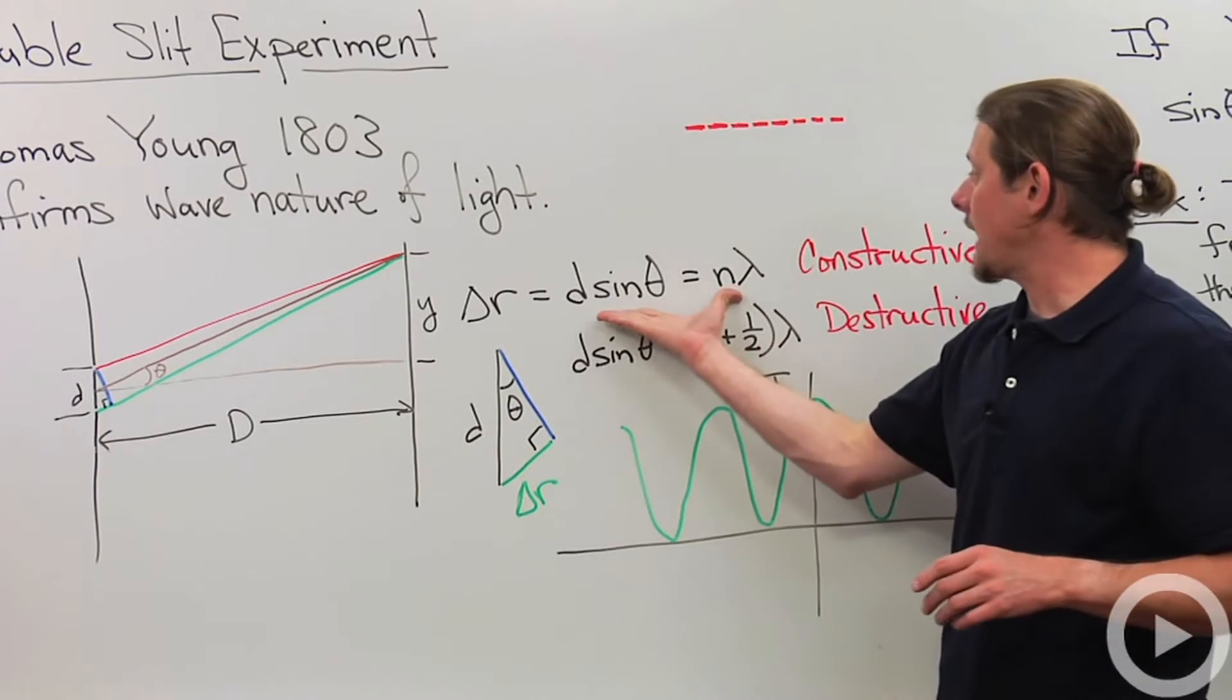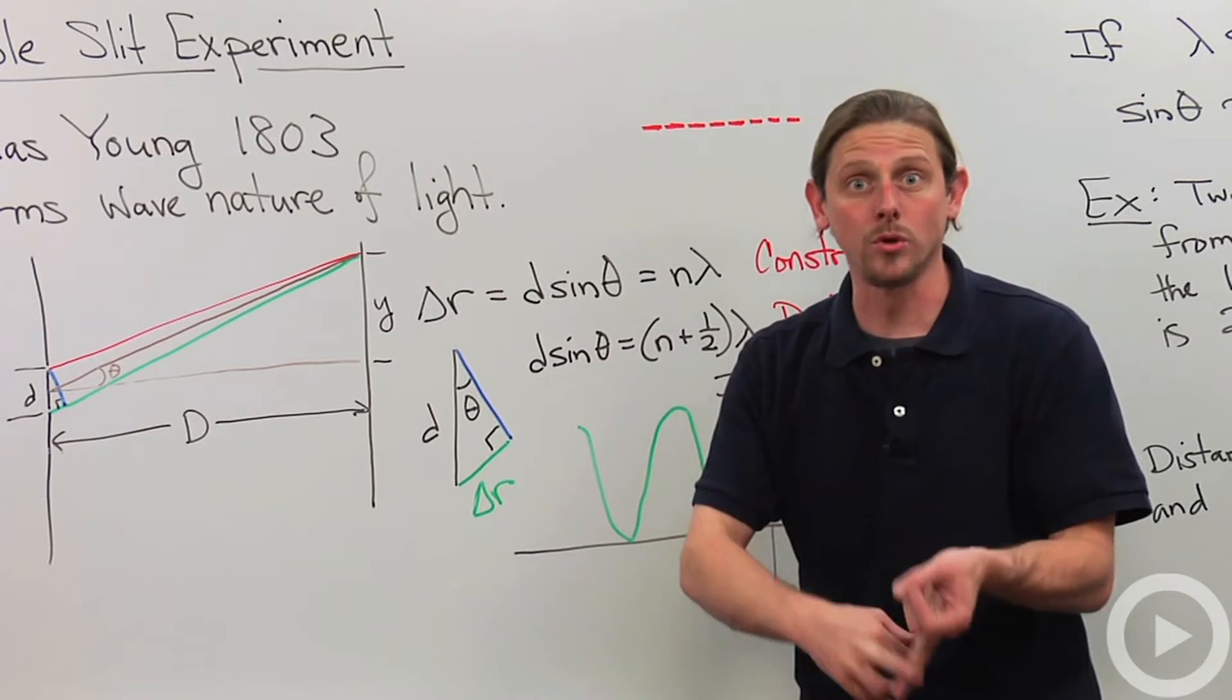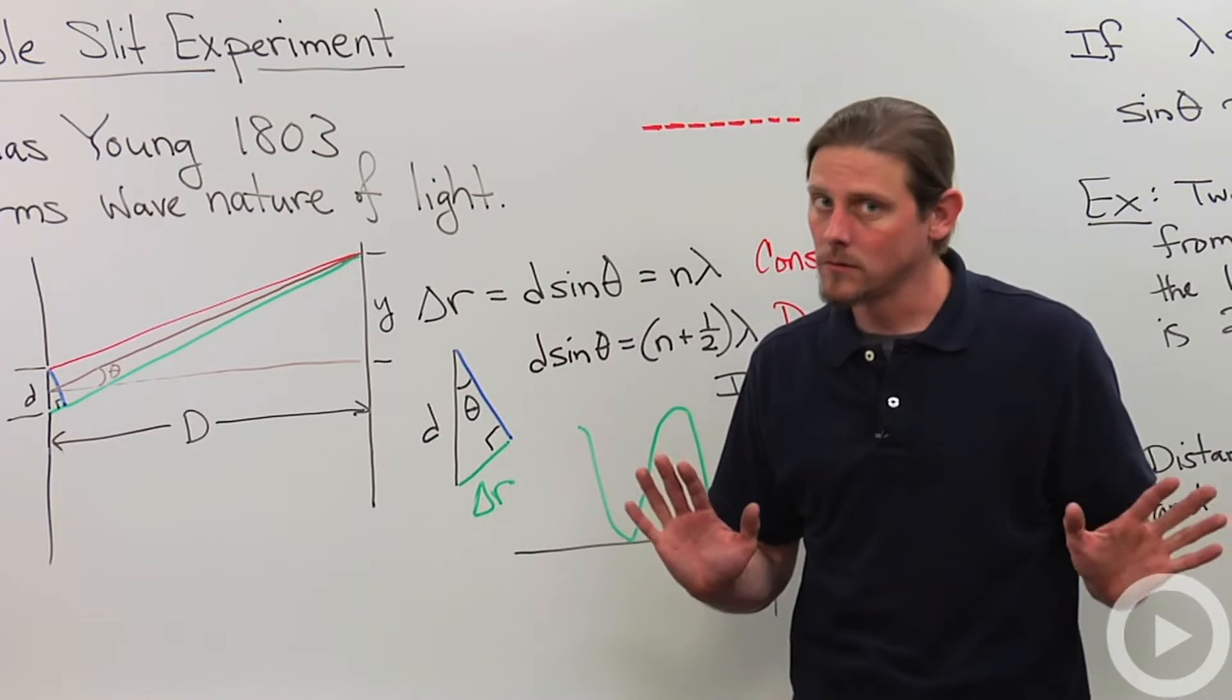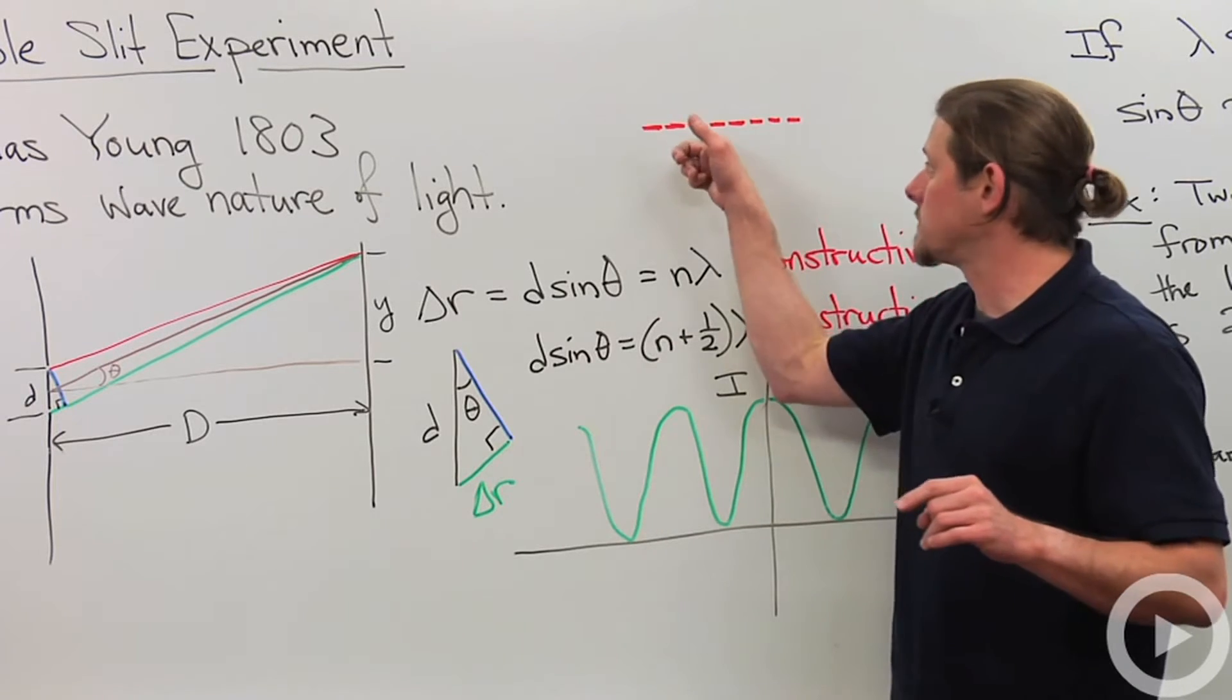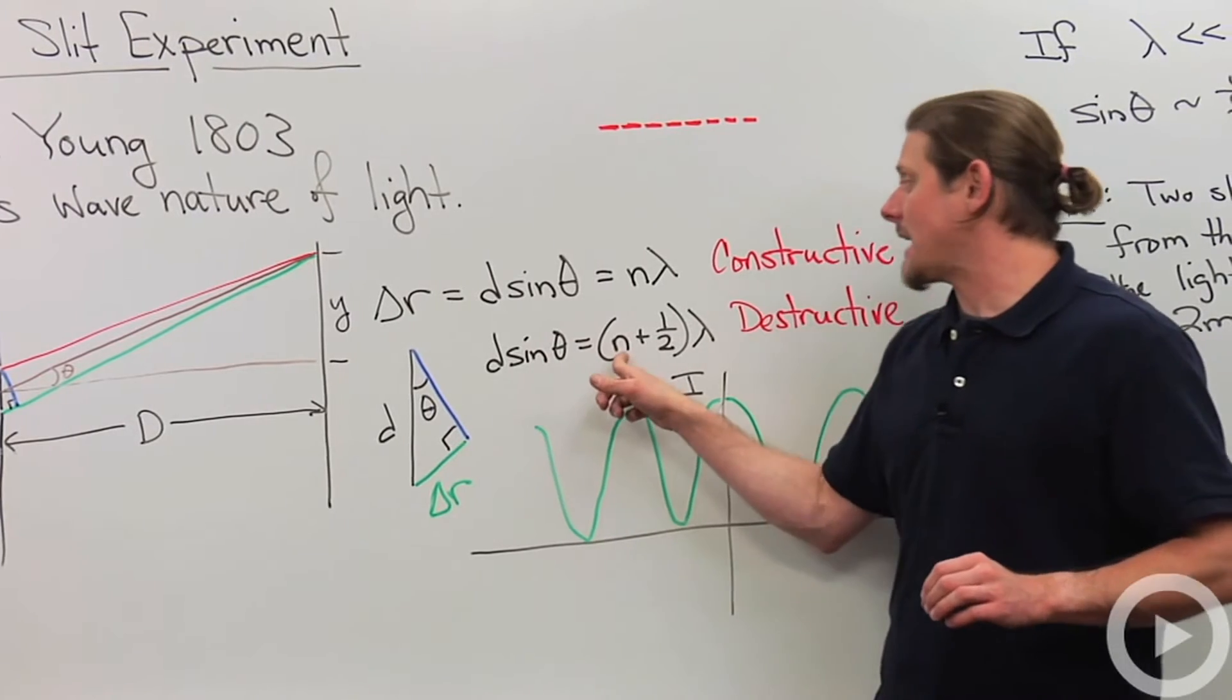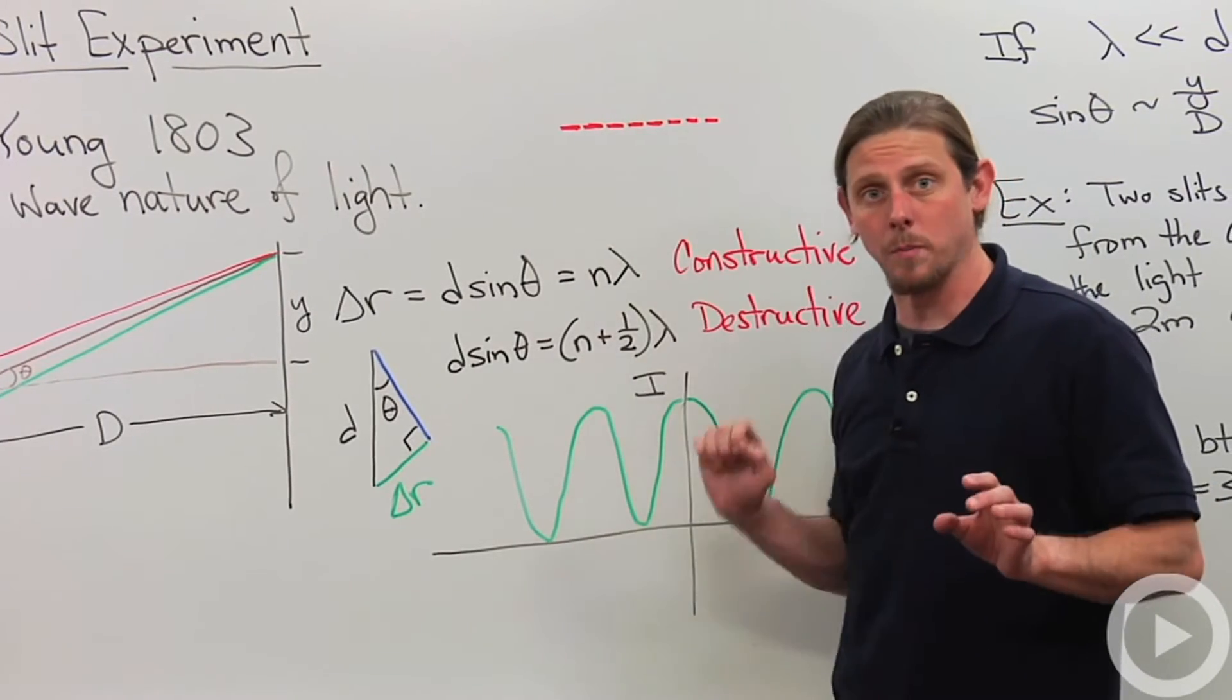So d sine theta equals an integral number of wavelengths. So that's n equals 1, n equals 2, n equals 3, 4, 5, not n equals 2.7. So an integral number of wavelengths, then I get constructive interference and that's what gives me one of these bright bands. If d sine theta is n wavelengths plus a half wavelength, now I've got destructive interference and that's going to give me a dark spot.